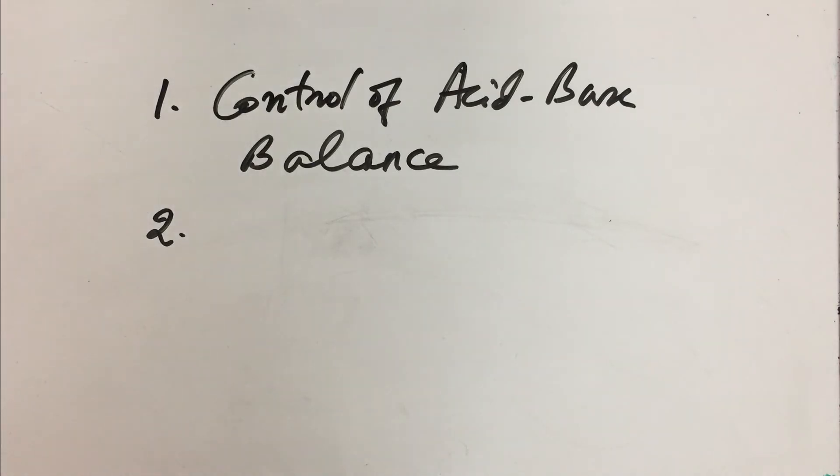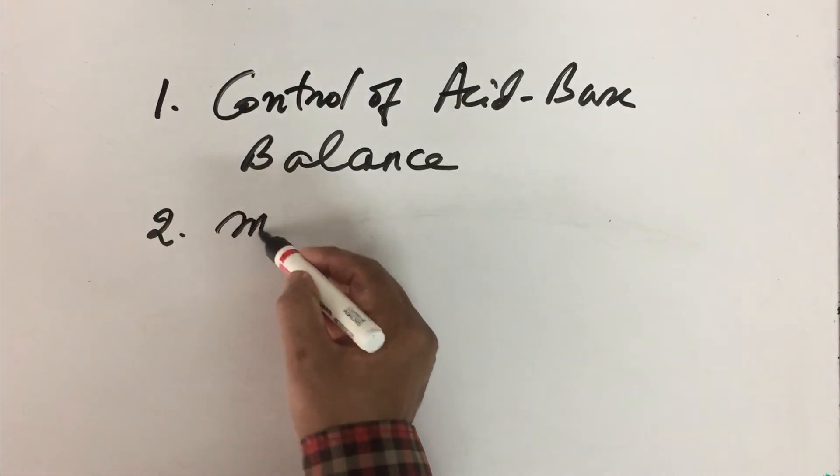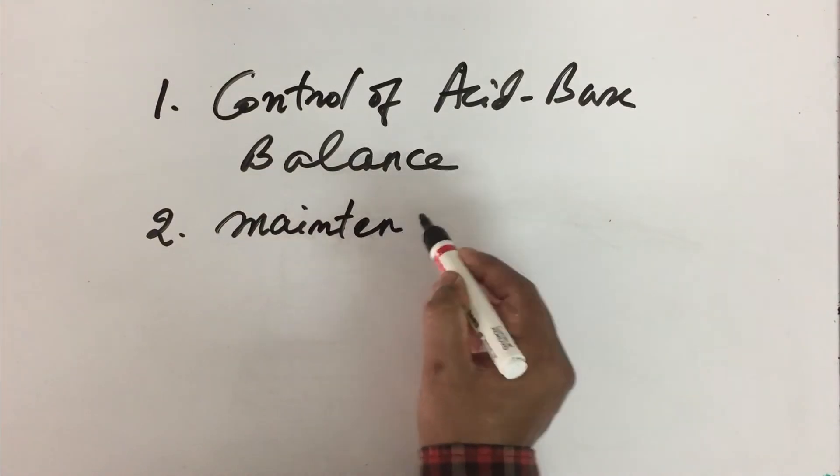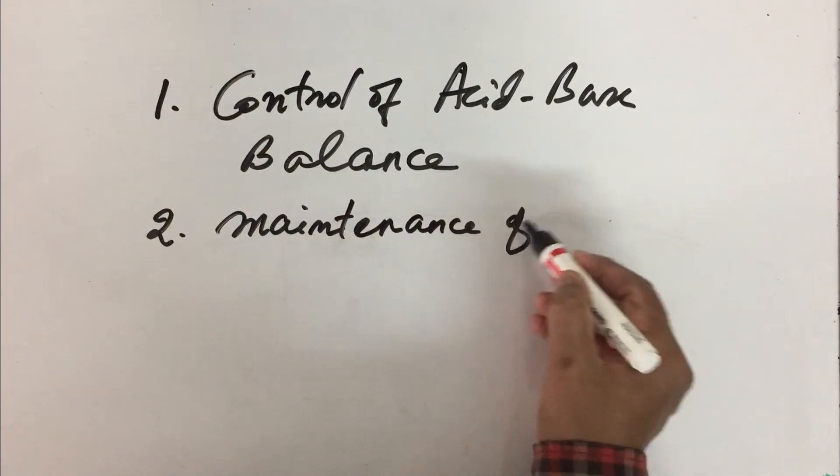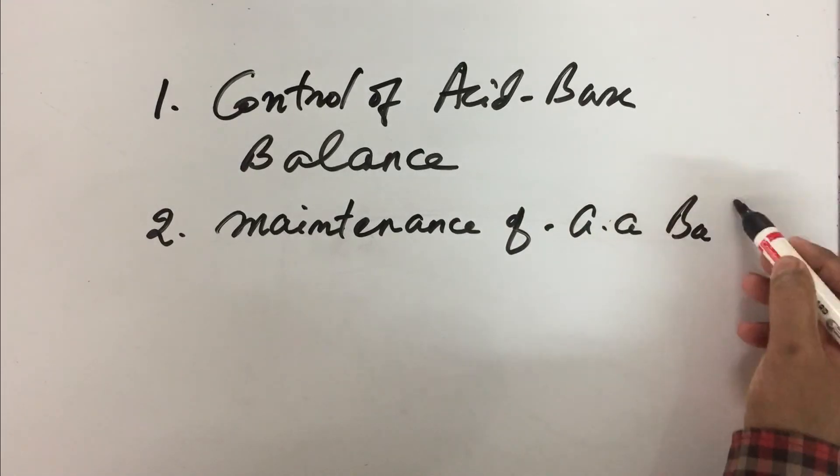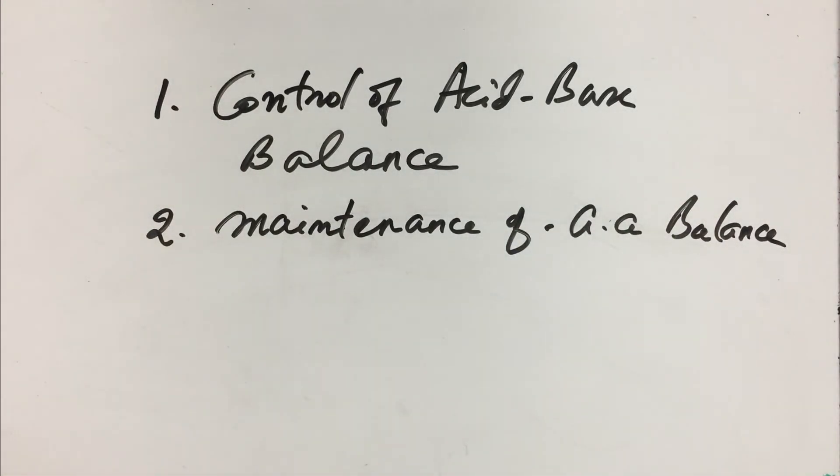The second metabolic role of gluconeogenesis is the maintenance of amino acid balance. So you know that many amino acids that are synthesized, if the normal concentration of amino acid has to be maintained in the body. So all the non-essential amino acids can be synthesized in the body.